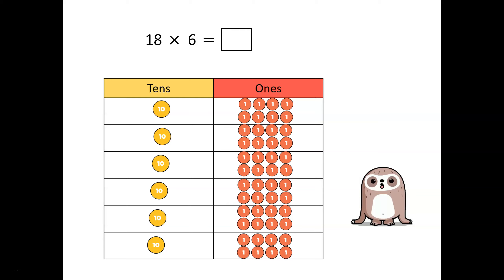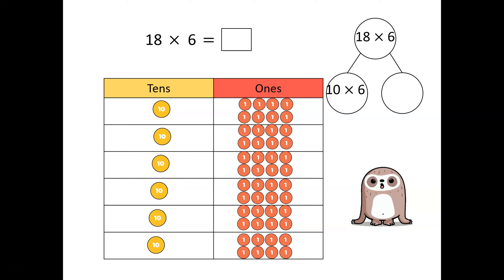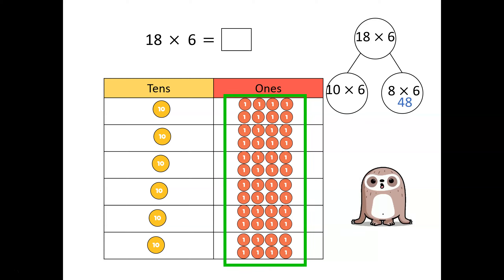We can show this in a part-whole model. We have ten multiplied by six in the tens column and eight multiplied by six in the ones column. Let's start with our smallest value — the ones. When we are multiplying, we always start with our smallest place value. Eight ones multiplied by six is equal to forty-eight. We can see there are forty-eight ones in the place value table.